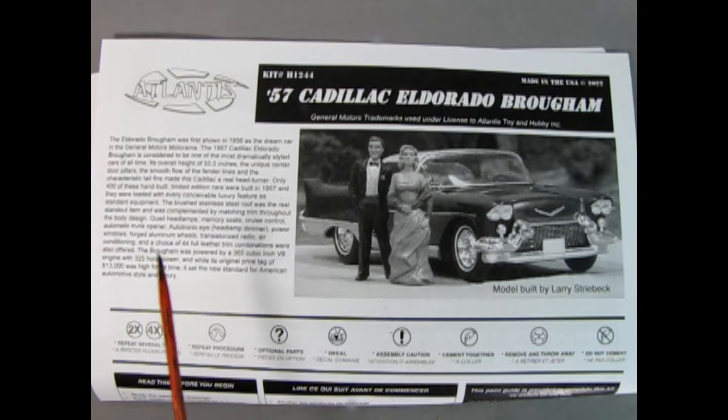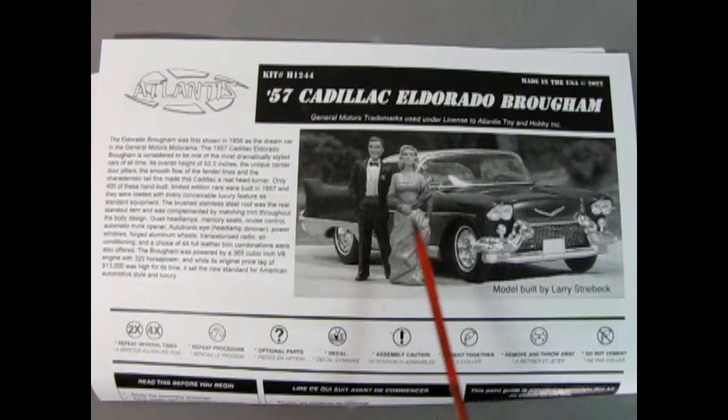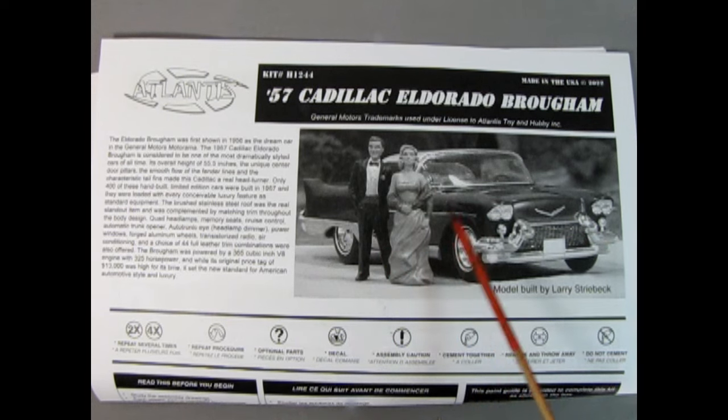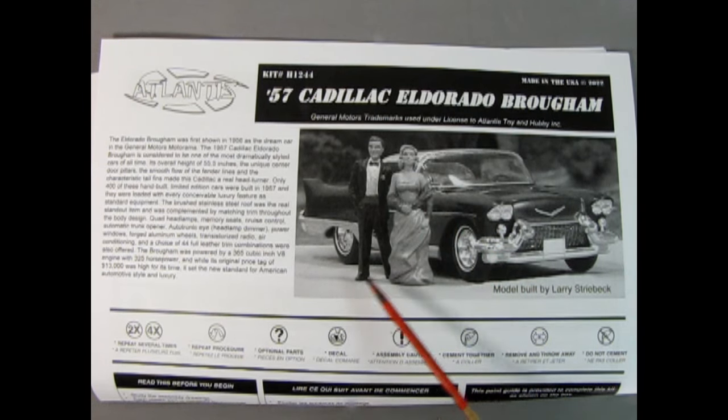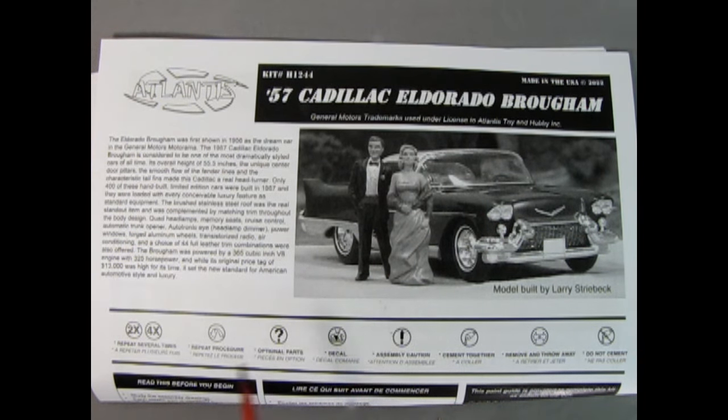Here we have our instruction sheet and I always like to start with this just so that we know how the model goes together before we actually look at the parts. Now these are the figures they were mentioning on the side of the box and these figures actually remind me of old photographs of my mom and dad because they got married back in the '50s. They were young adults and I'm pretty sure my mom had a dress quite like this. This wonderful photograph showing both the model and the figures was built by Larry Streeback.